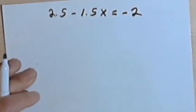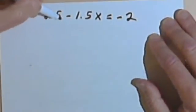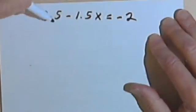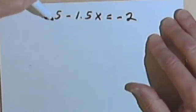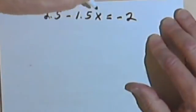Here's the problem with the decimal in it. Now we could work this problem, 2.5 minus 1.5x equals negative 2. We could work it with the decimal places in there. But a nice way to get rid of decimal points is to multiply.